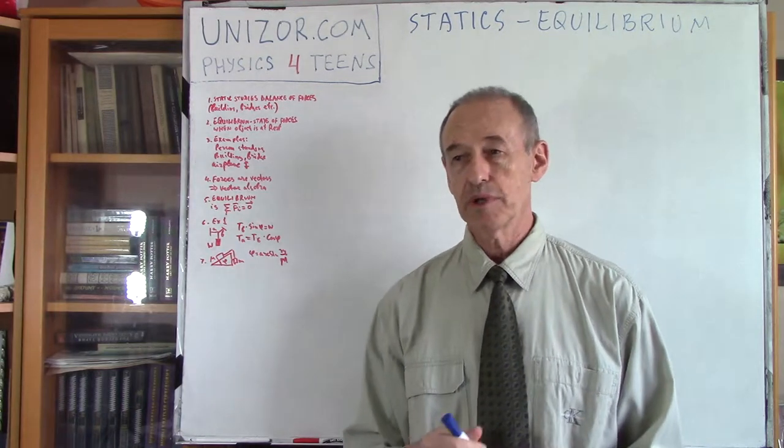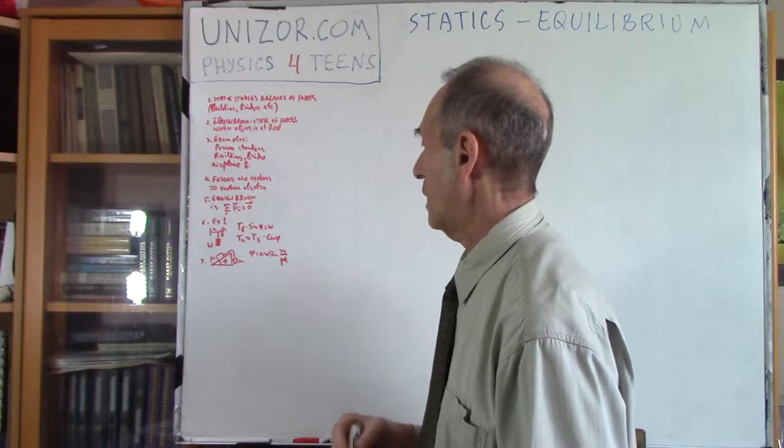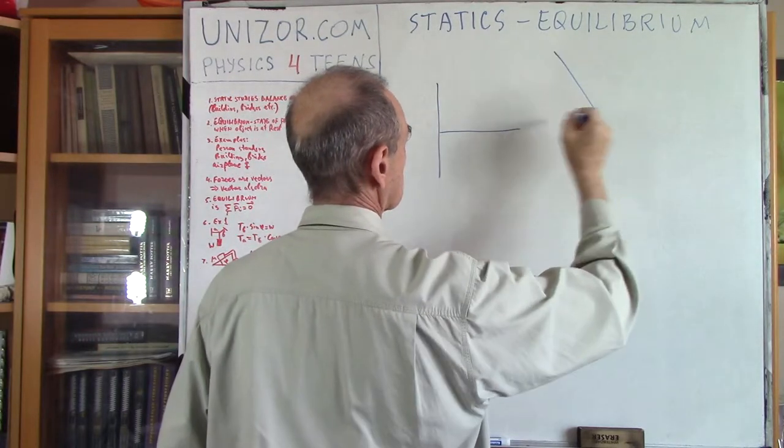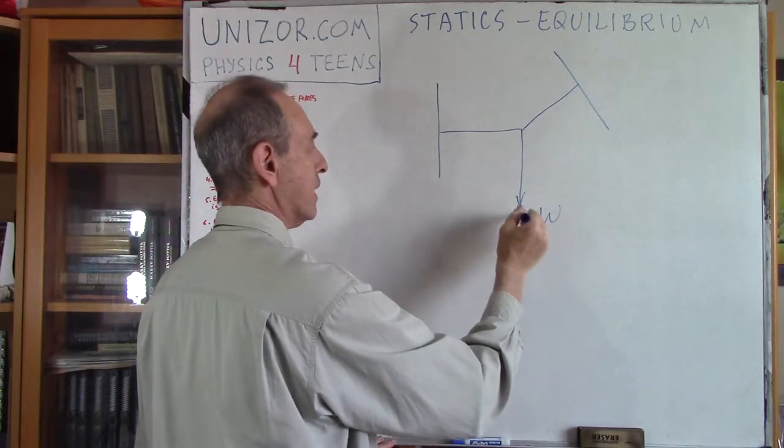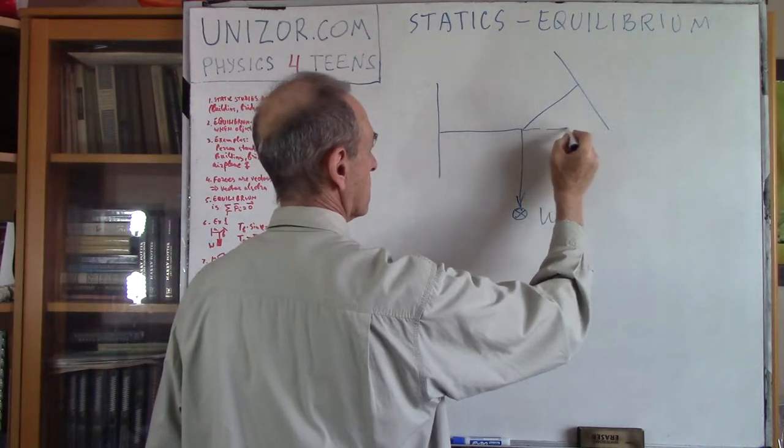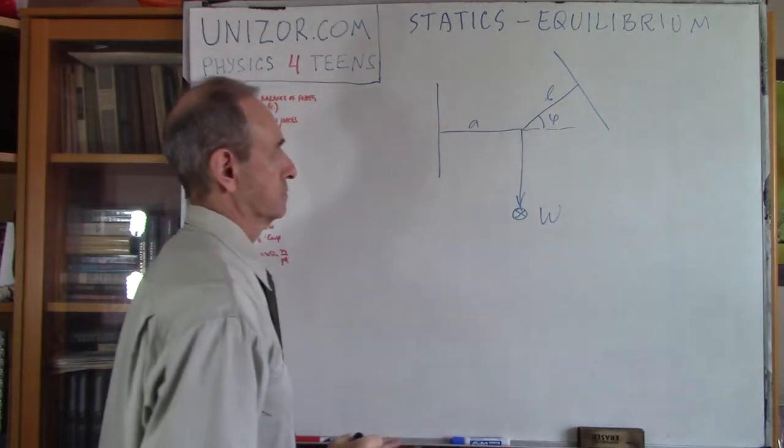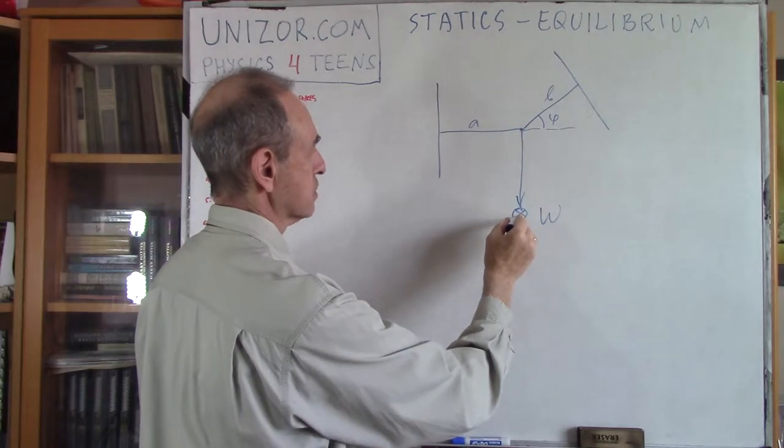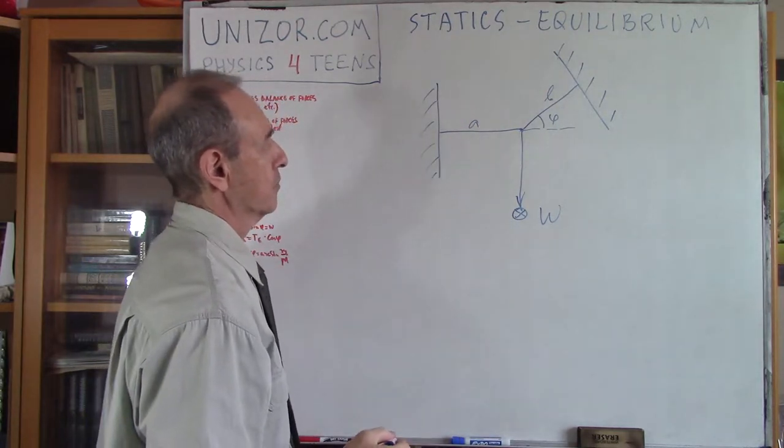All right, so we will basically learn about equilibrium by considering certain examples and that's exactly what I would like to do. So example number one is you have the following construction. This is the weight of this particular point object and it's hanging on two threads. Now this thread, thread A is horizontal, now the thread B is at angle phi.